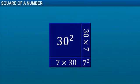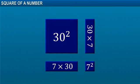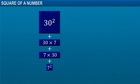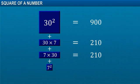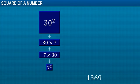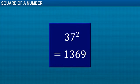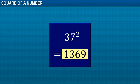Now, let's simplify. Thus, we find that the square of 37 is equal to 1369.